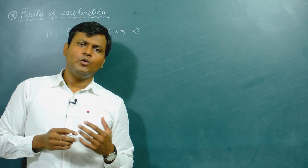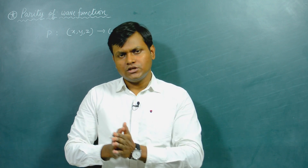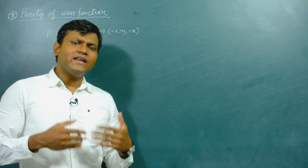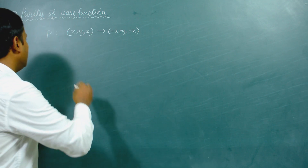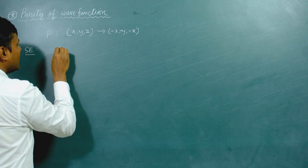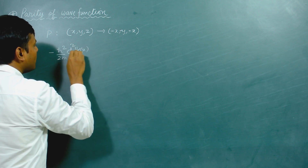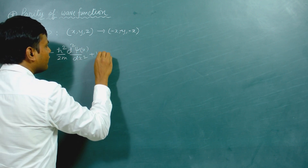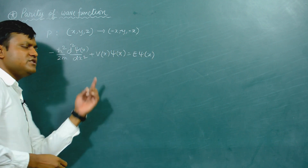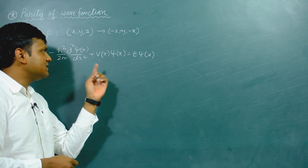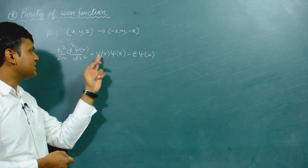What I want to talk about in this video is what happens to wave functions in a quantum system under a similar kind of parity operation or space reflection. The entirety of the information of a given particle in a quantum system is contained in the Schrödinger equation, which has the form: minus h-cross squared over 2m times d²ψ(x)/dx² plus V(x)ψ(x) equals Eψ(x).